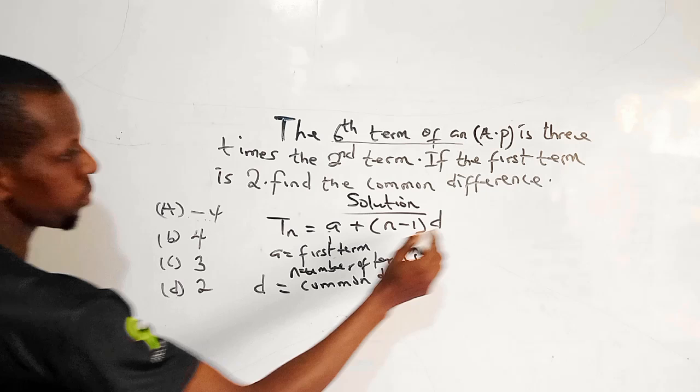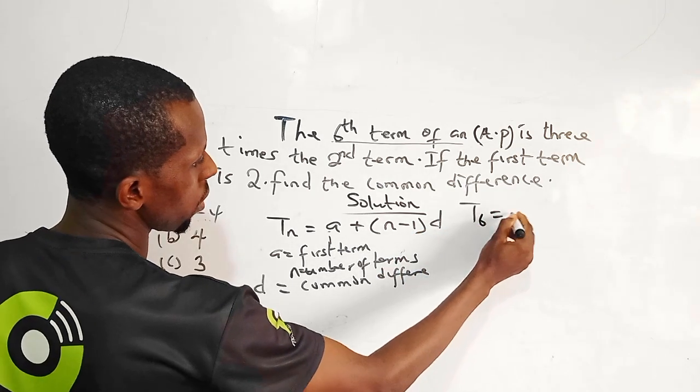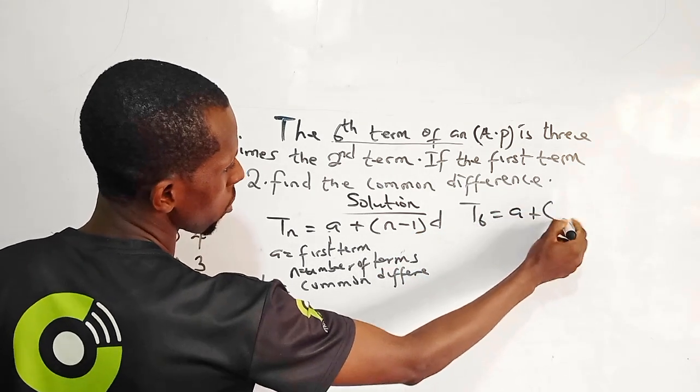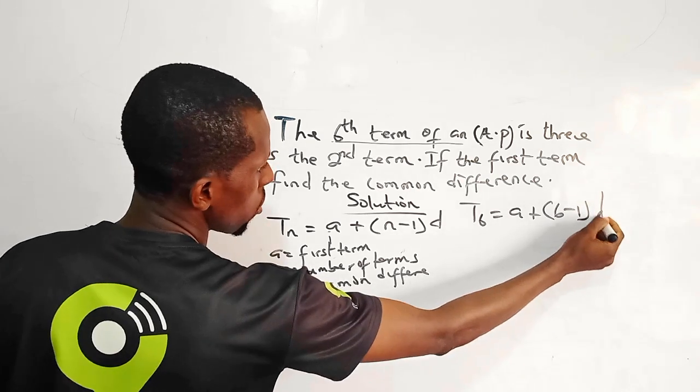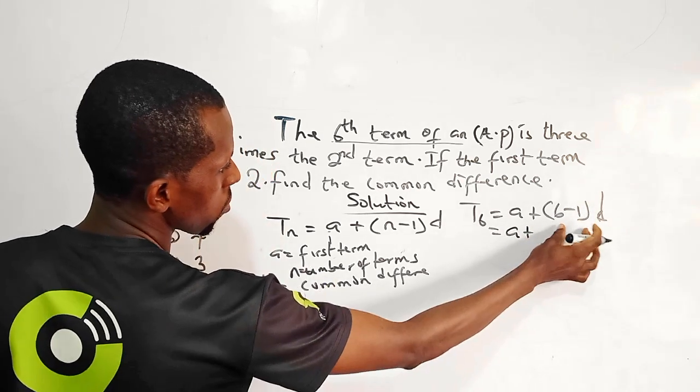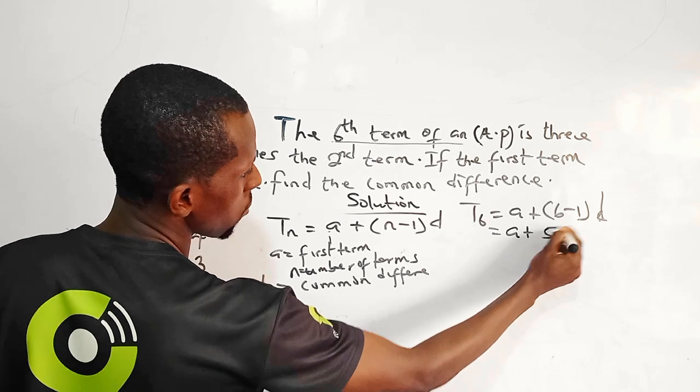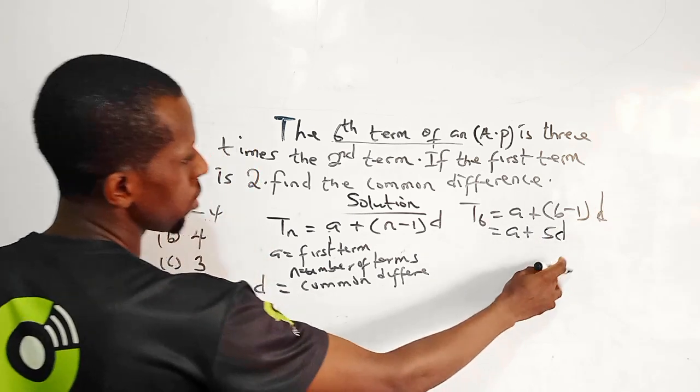So the sixth term will represent a plus 6 minus 1 times d. So this one equals a plus 6 minus 1 is 5 times d. That is 5d.